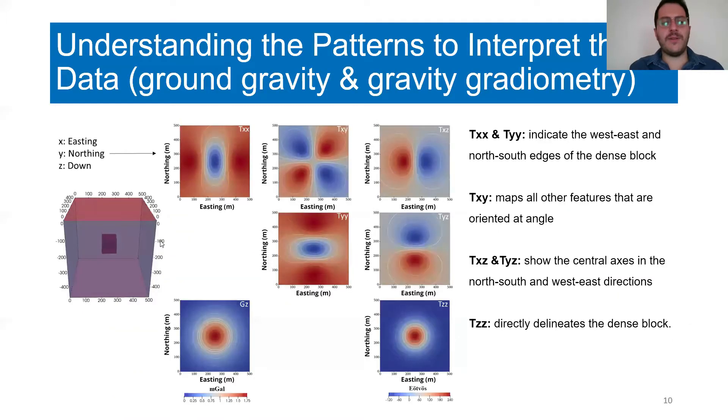Here's an example of patterns for the ground gravity and gravity gradiometric data for a dense block that's located beneath the flat surface centrally. The interpretation of gravity gradiometric data might seem challenging. However, the useful thing to do is start interpretation with the Tzz component, as this is the component that's most related to subsurface geology. We can see that it directly delineates the dense block.